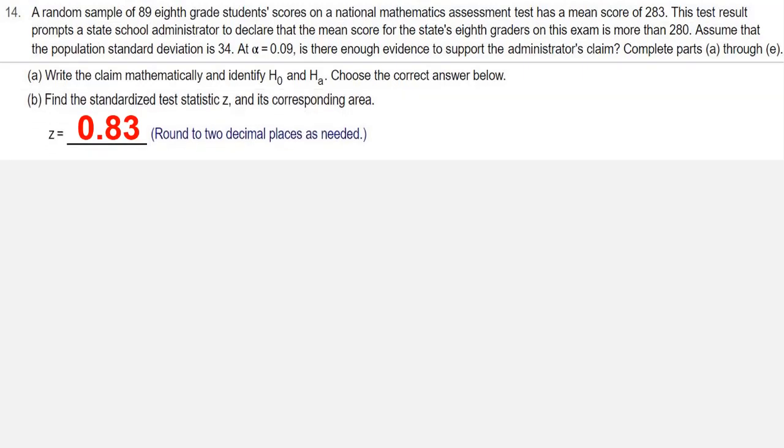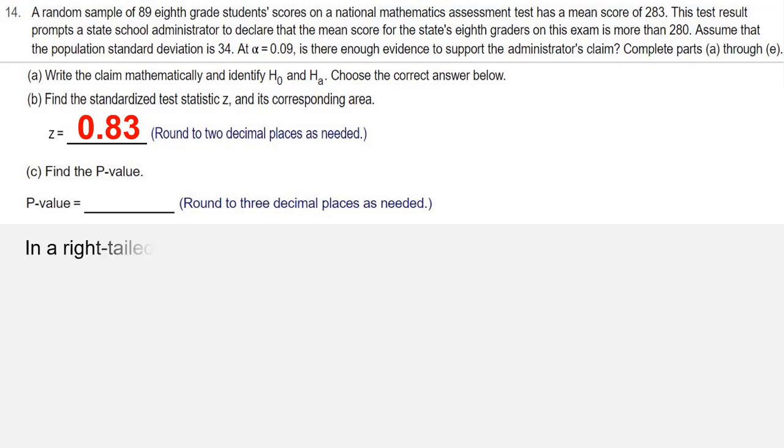Let's make a little more room for ourselves here. The next part, Part C, says find the p-value. We're doing a right-tailed test here. In a right-tailed test, the p-value is 1 minus the table value.